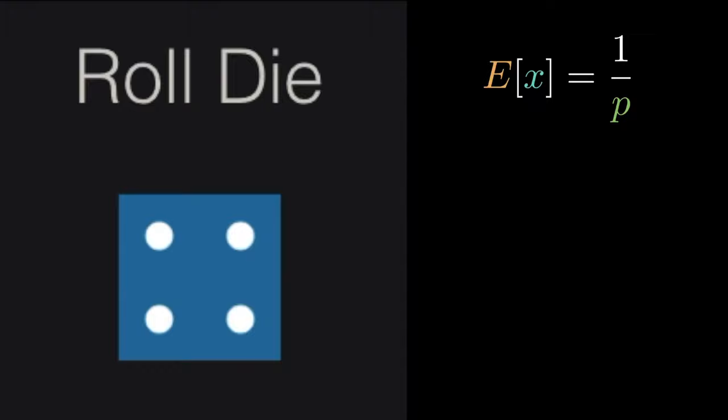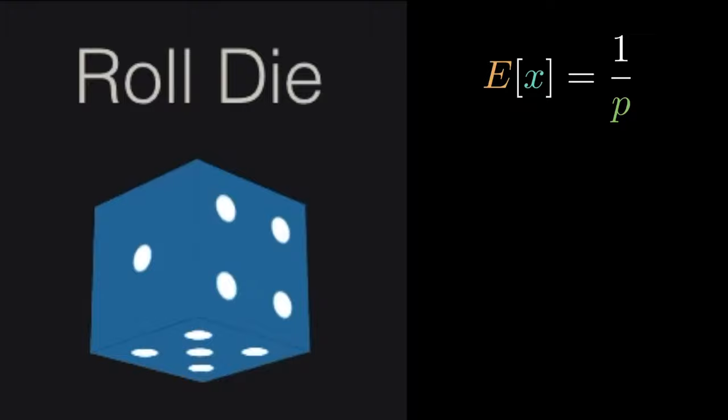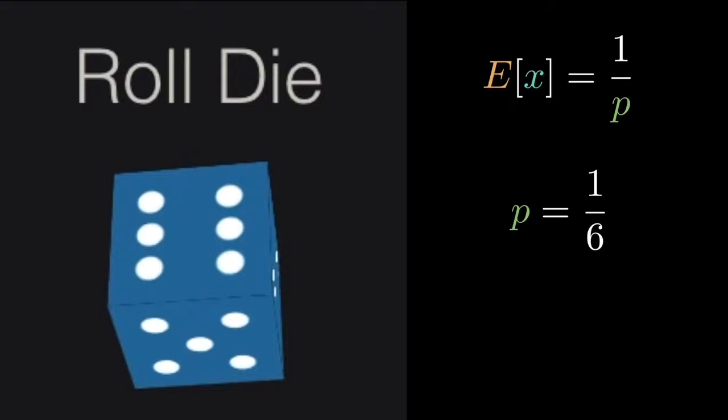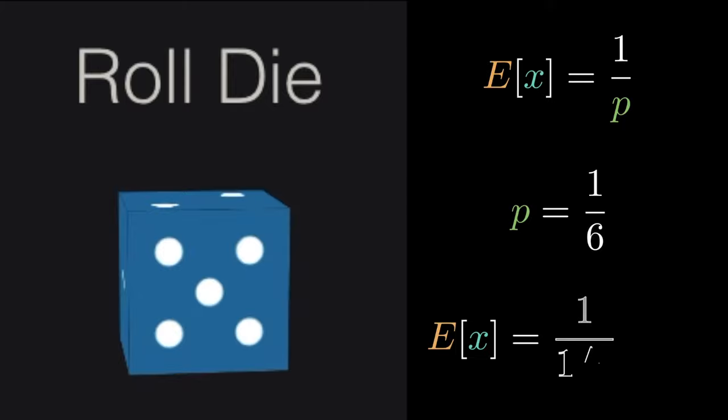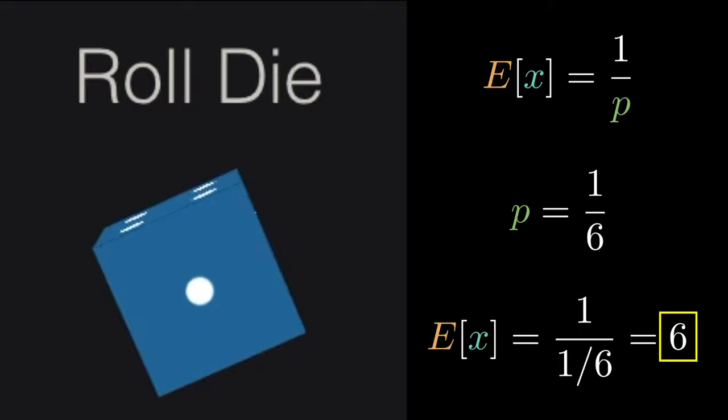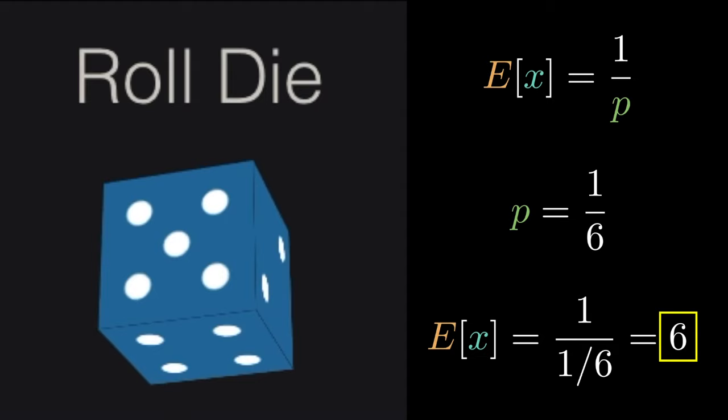Let's consider a dice roll. Let's define success as getting a 5 and a failure as anything else. We know P is the probability of getting a 5 which is 1 over 6, and the expected value for the number of throws before getting a 5 is 1 over P which is equal to 6, which makes sense right? If we roll the dice six times we expect one out of the six rolls to be a 5.